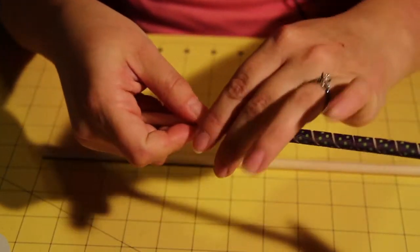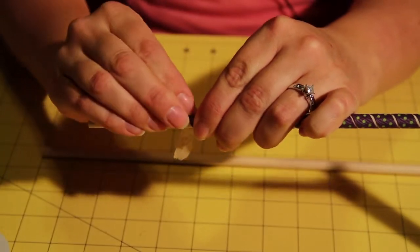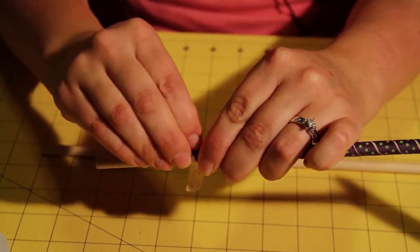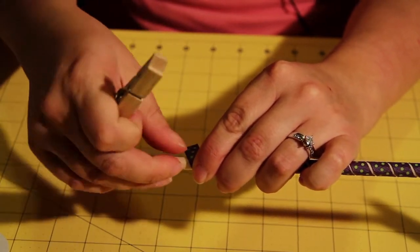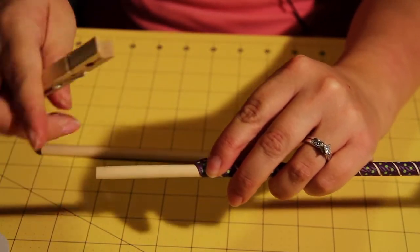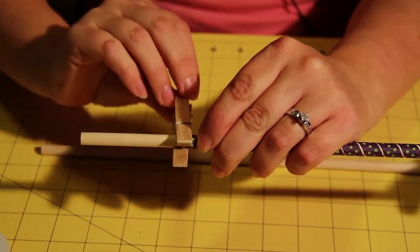And then when you get to the end you are going to just attach another clothes pin to hold the end of the ribbon in place. I like to do this and twist it around to make sure that it is really tight.